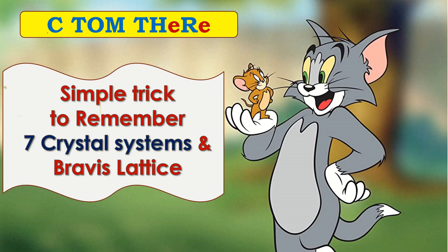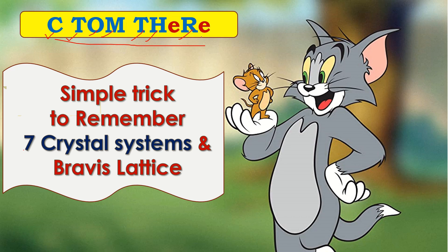The shortcut is 'C Tom There' — based on the cartoon Tom and Jerry. C stands for cubic, T for tetragonal, O for orthorhombic, M for monoclinic, T for triclinic, H for hexagonal, and R for rhombohedral. Do not change the order, otherwise you will make mistakes.